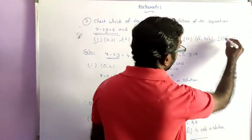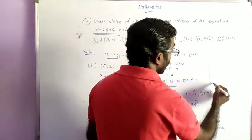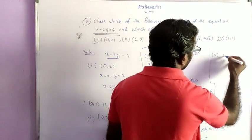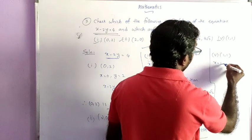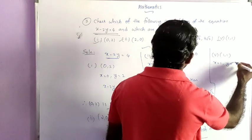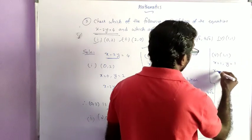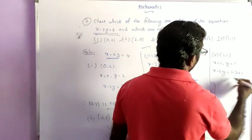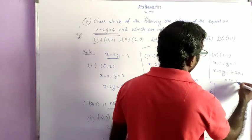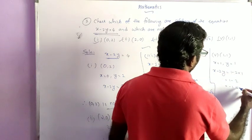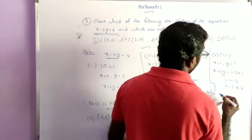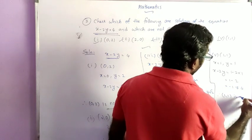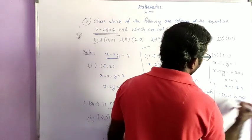For (1, 1): x minus 2y equals 1 minus 2 times 1, which is 1 minus 2, giving minus 1. This is not equal to 4. Therefore (1, 1) is not a solution.